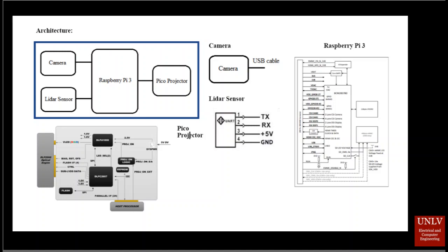The components used for the Interactive Helmet are a 360-degree camera, LiDAR sensor, Pico projector, and Raspberry Pi 3. The live data of the 360-degree camera is continuously sent to the Raspberry Pi and processed together with the live data from the LiDAR sensor.